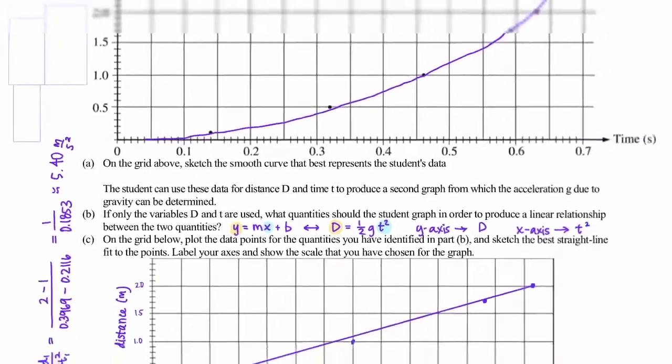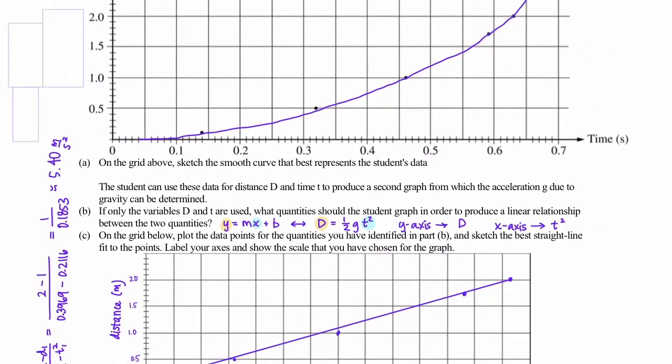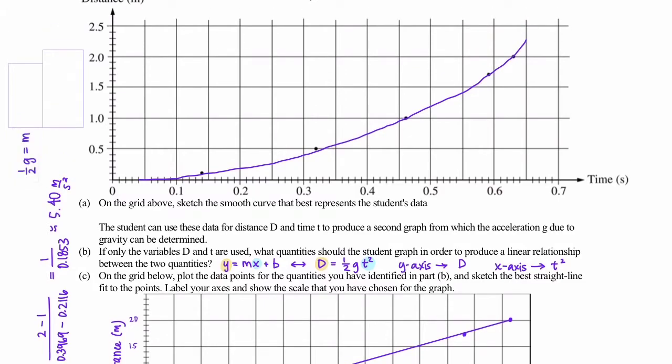But we're not done yet. That's not our acceleration, because our slope is equal to one-half g. Rearranging for g, we just need to multiply both sides by 2. And so we get that g is going to be twice our slope. So if we multiply our 5.4 by 2, we get that acceleration is roughly equal to 10.8 meters per second squared. And of course, that's going to be negative.